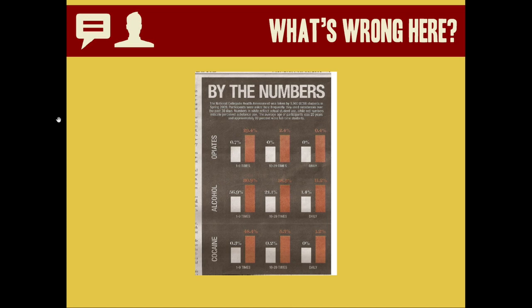There's no rule lines given to indicate units or scale. And also, the zero percent bar for opiates or cocaine is the same size as the 56.9% bar for alcohol. So do yourself a favor and proof your graphs and charts before you publish them.